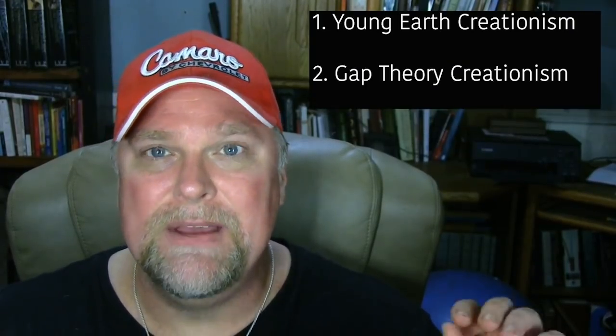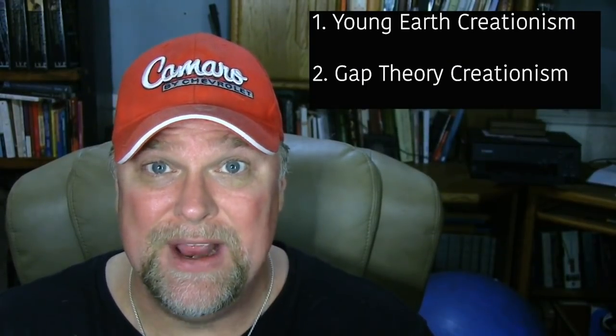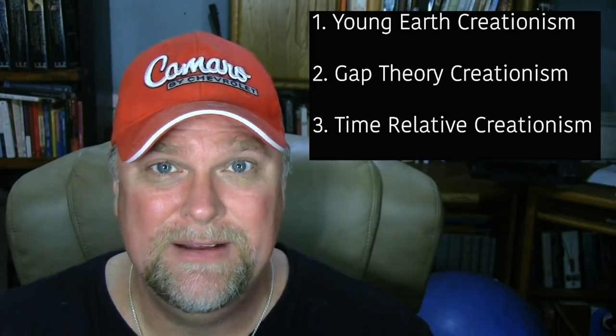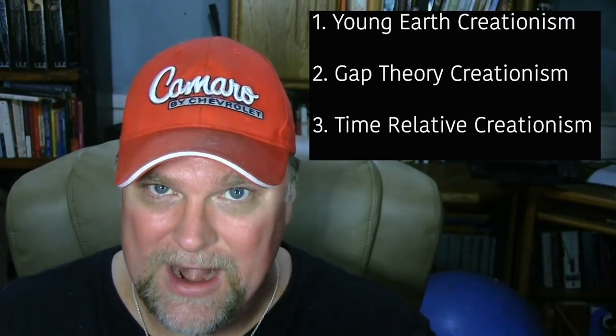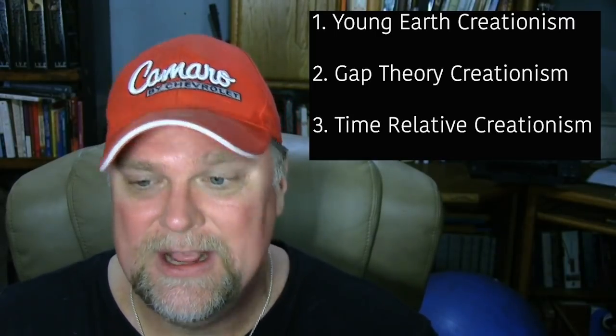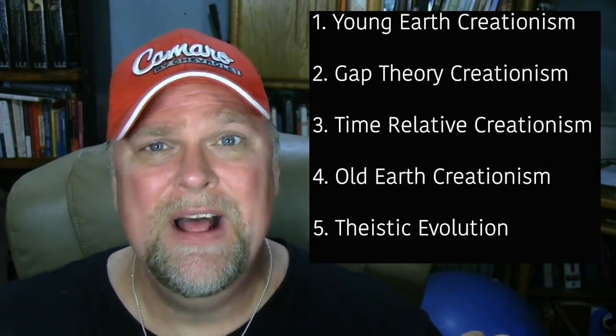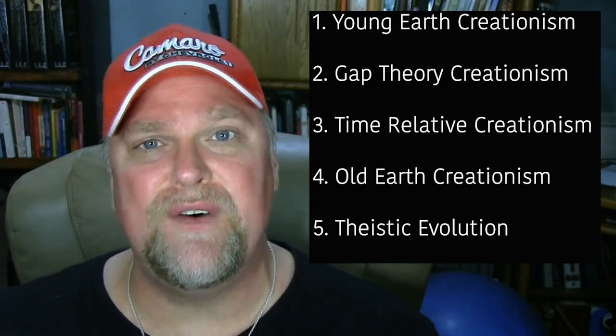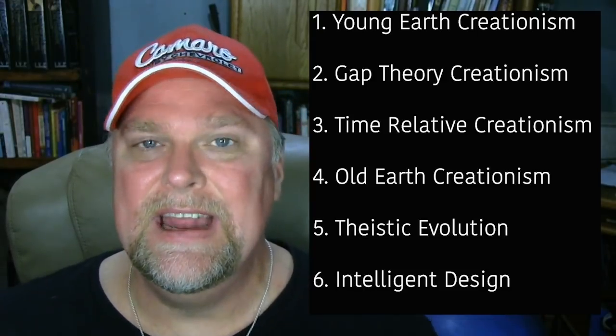Now let me tell you what those are: Young Earth Creationism, Gap Theory Creationism, Time Relative Creationism — I know, you're going to have to check it out — Old Earth Creationism, Theistic Evolution, and finally Intelligent Design. I will explain each one of these, their strengths and weaknesses.